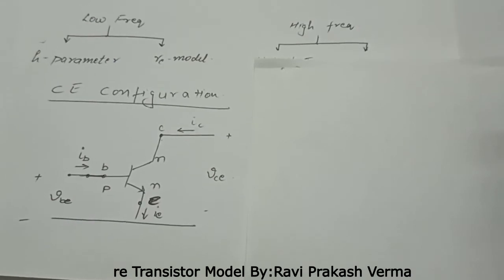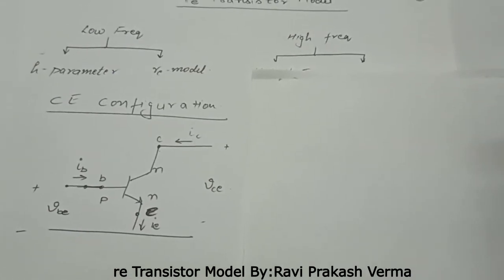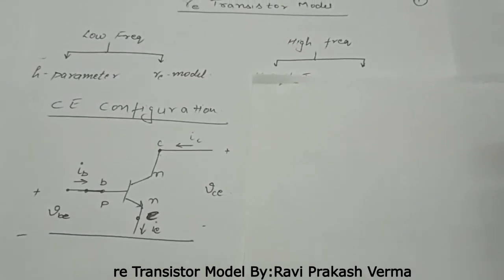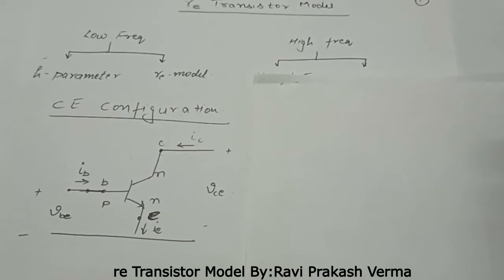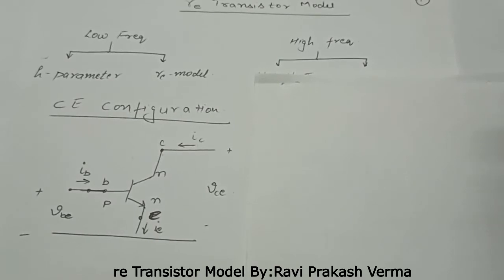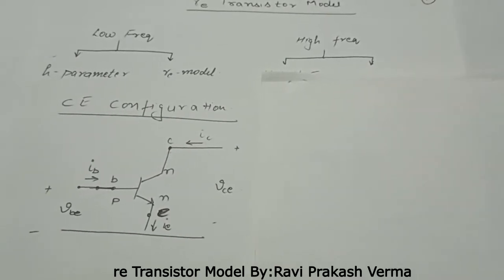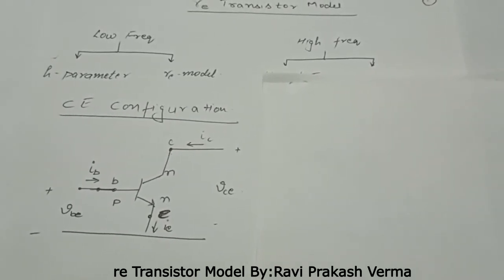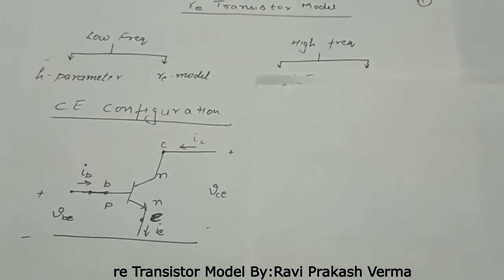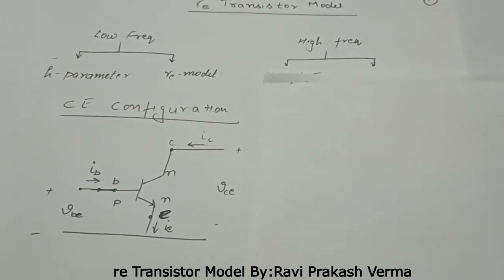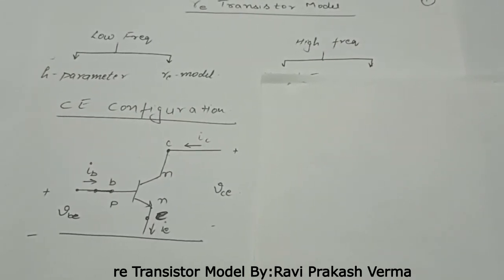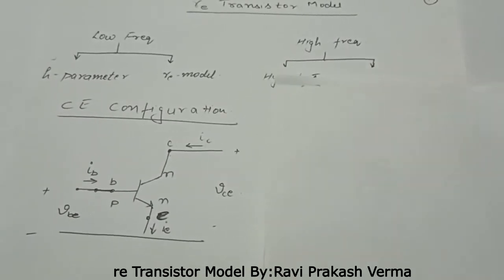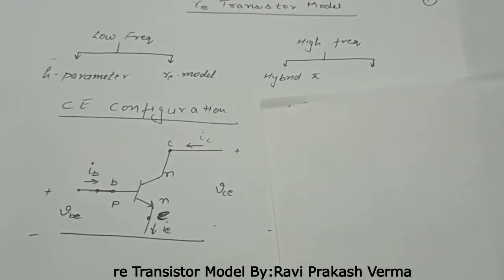Hello guys, this is Ravi. Today I am going to discuss the RE transistor model for the analysis of a transistor. There are different types of transistor models used for different low frequency signals and high frequency signals. H parameter and RE model are used for low frequency signals, while the hybrid pi model is used for the analysis of high frequency signals.